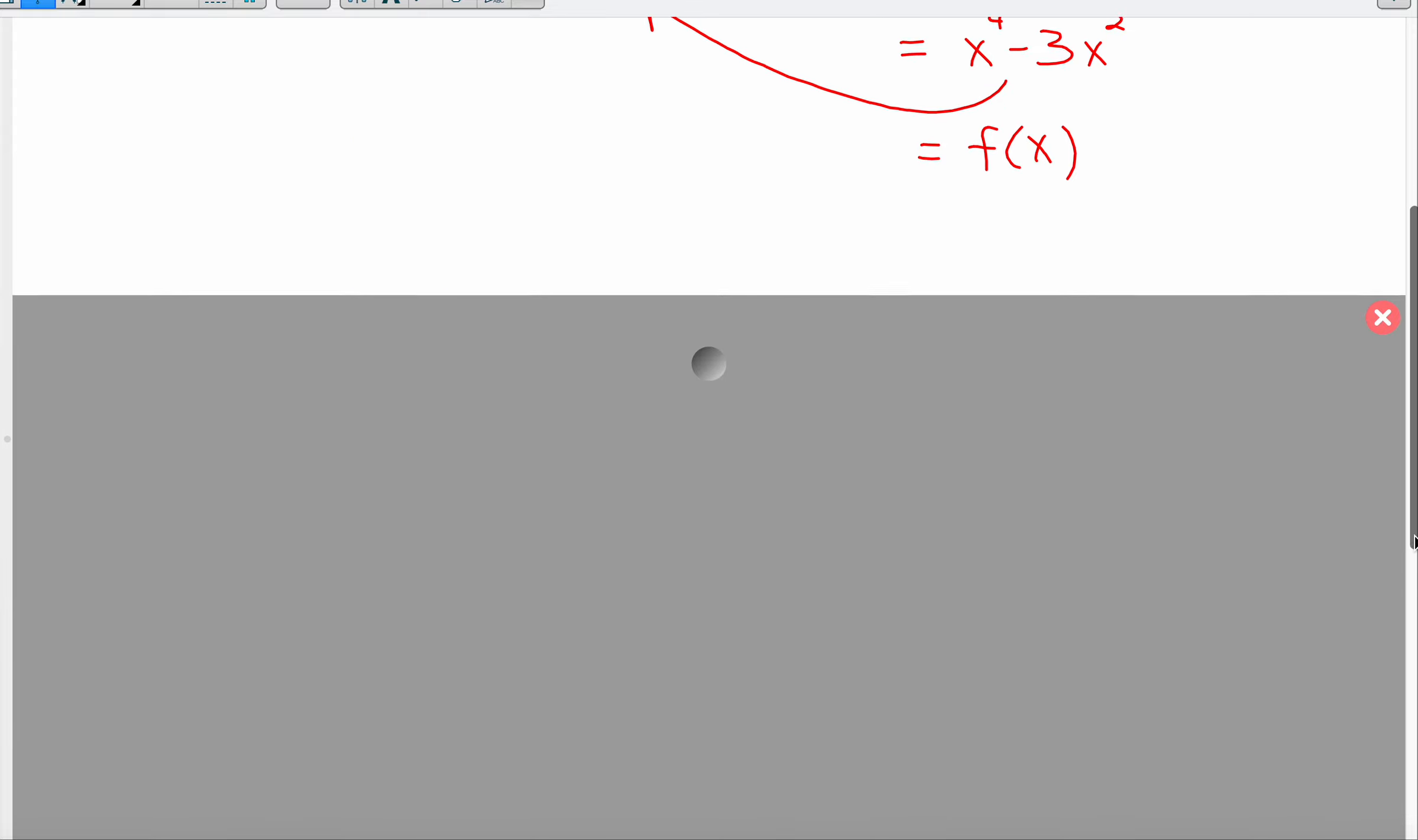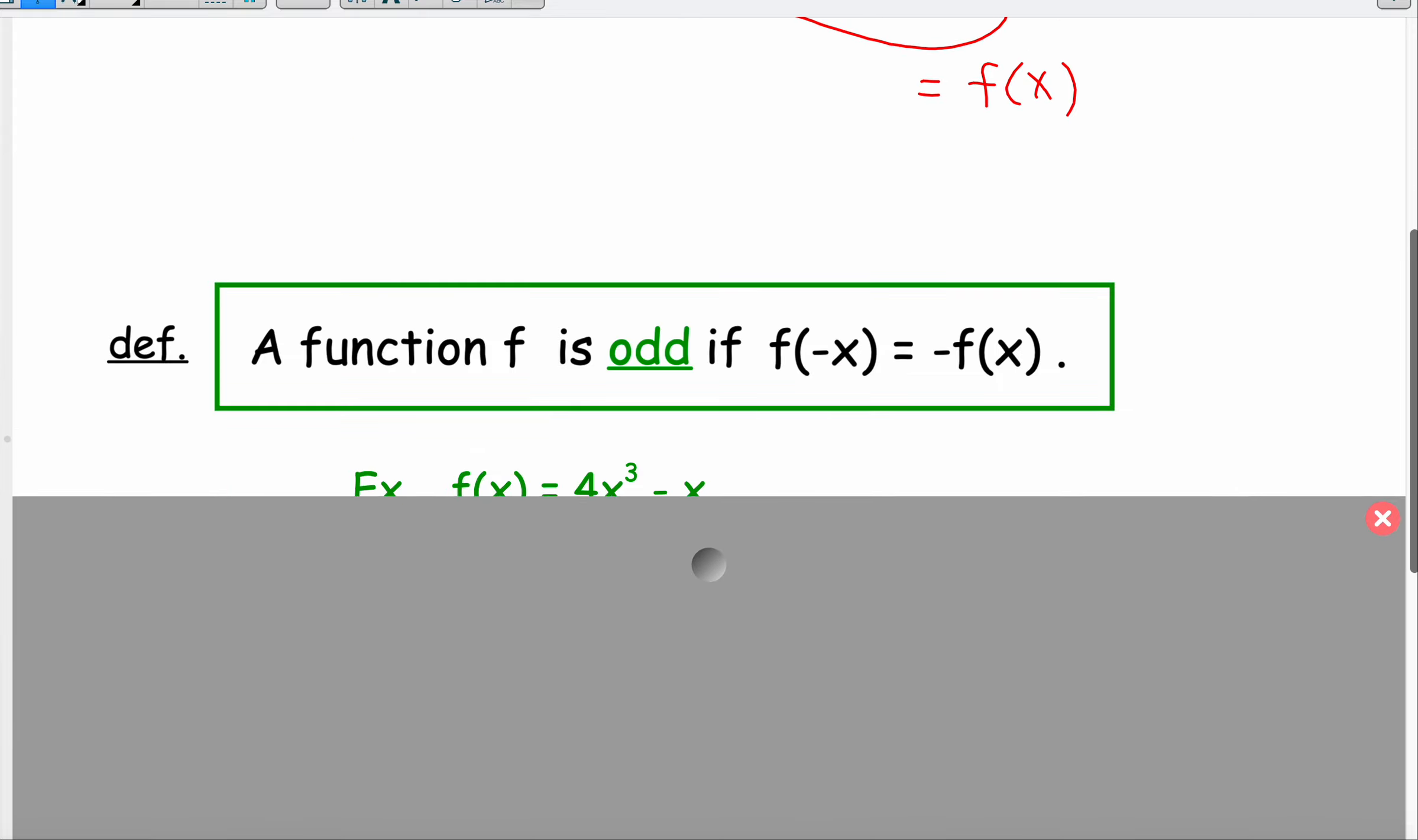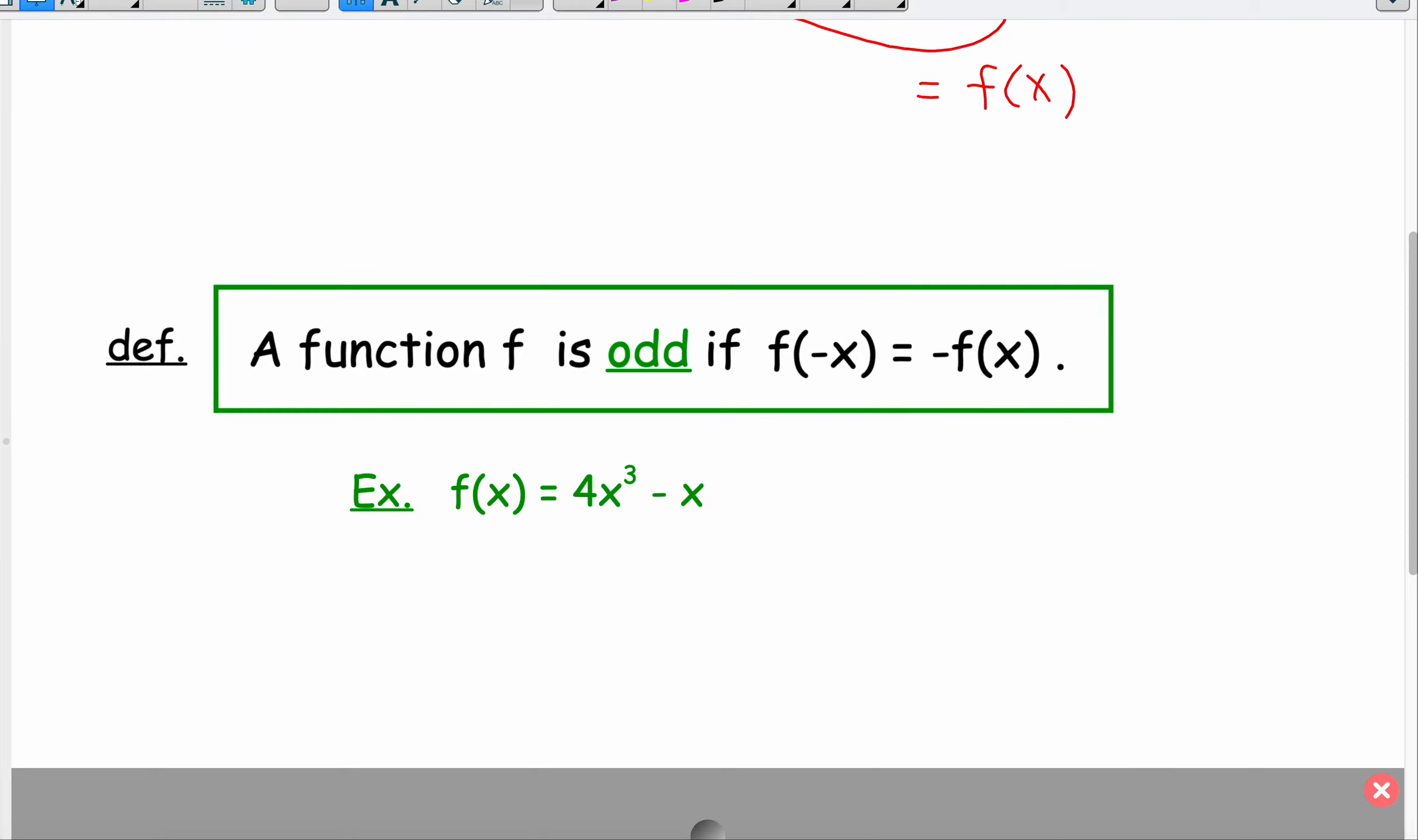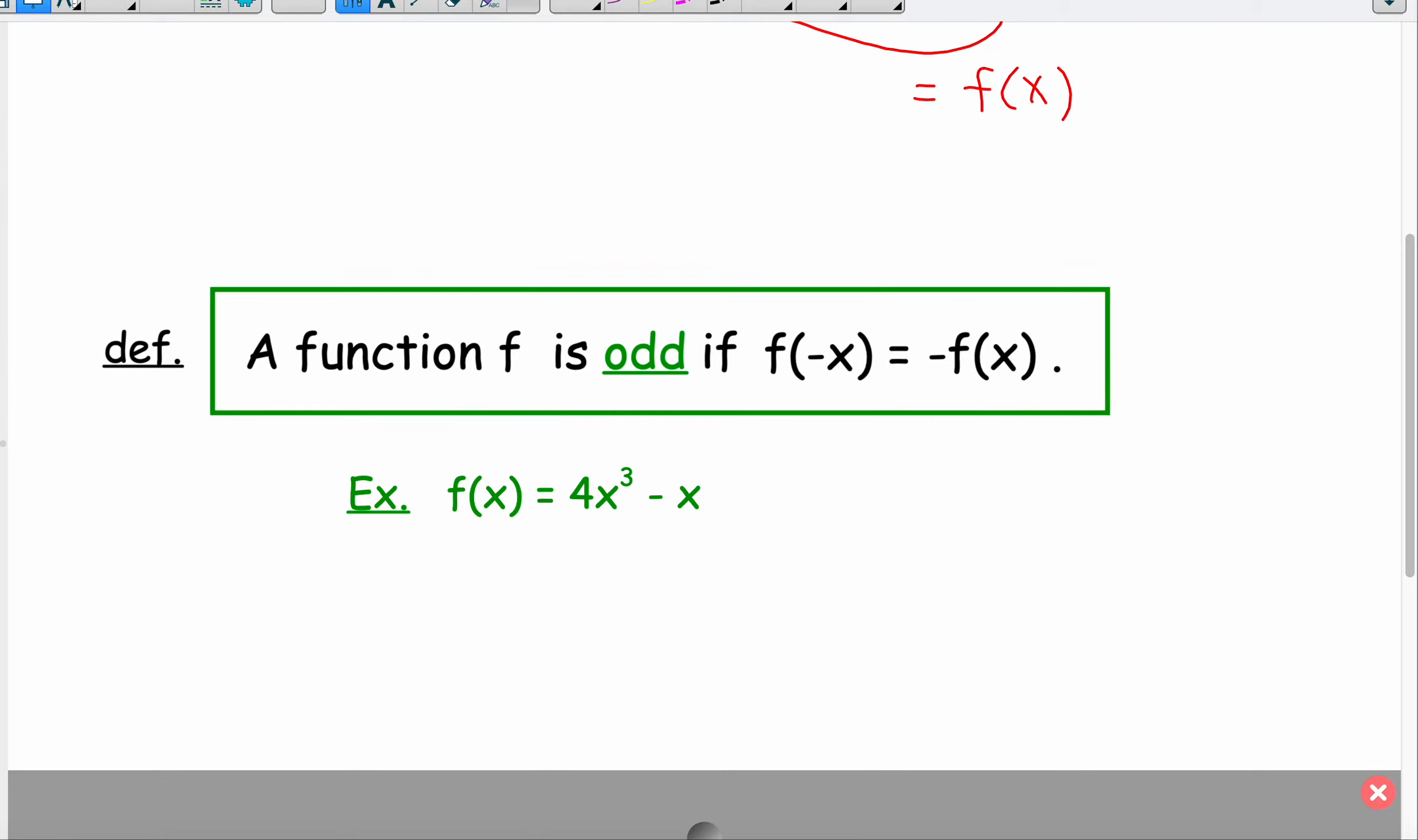Now an odd function, on the other hand, is when f of negative x actually gives me the complete opposite of the original function f of x. So I'll show you that with an example. All right, let's say that we have f of x is 4x cubed minus x.